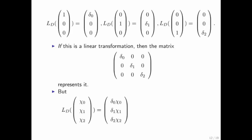Well, the vector function takes chi 0, chi 1, chi 2, and makes it into delta 0 times chi 0, delta 1 times chi 1, and delta 2 times chi 2.